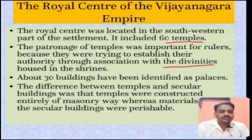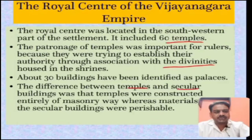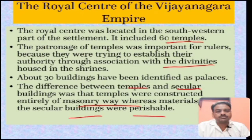About 30 buildings have been identified as palaces, so there used to be palaces of the royal elites and around 30 such buildings were found. The difference between temples and secular buildings is notable - temples were constructed entirely of masonry, whereas materials of secular buildings were perishable. Temples were made of stone that could not biodegrade with the passage of time, while ordinary houses and even the ruler's residences were made of perishable items, so they decayed - but some temples are still standing.